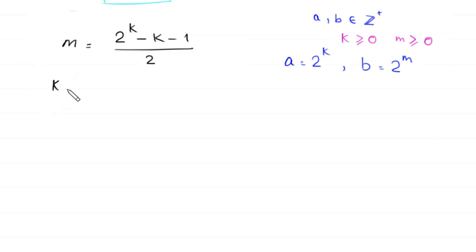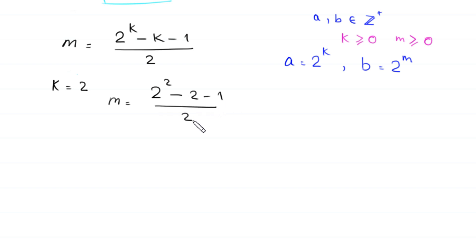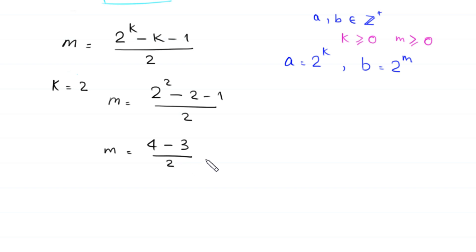We set k equal to 2. So m equals (2 to the power 2 minus 2 minus 1) divided by 2, which becomes (4 minus 2 minus 1) divided by 2, giving 1 over 2, which is not an integer. So k equals 2 gives no valid solution.